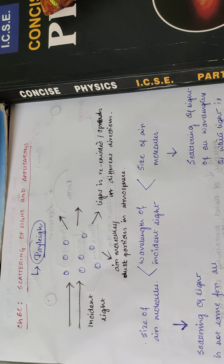But for the case where the size of your molecules or dust particles is less than the wavelength of the incident light, we find that the scattering is not the same for all wavelengths of light — it is different for red, blue, and violet.